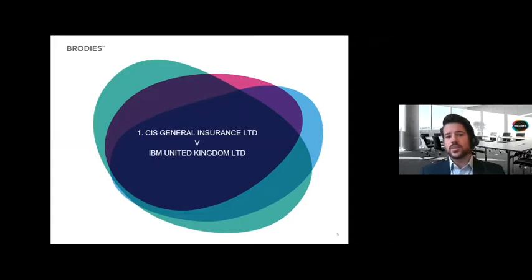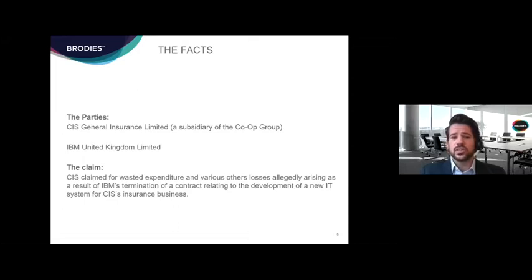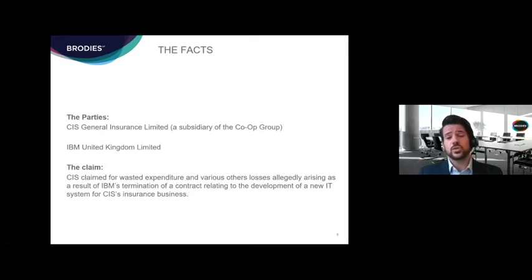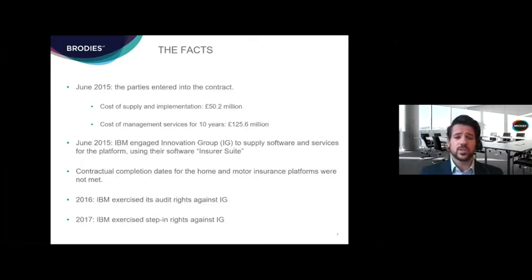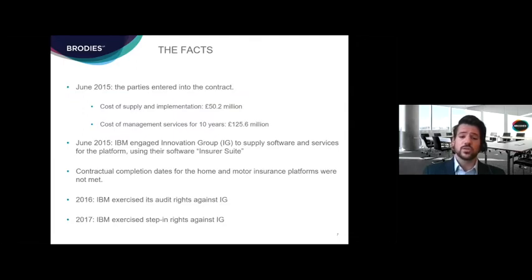Thanks, Ian. I'm going to give a bit of an overview of the recent decision in England in the case of CIS General Insurance against IBM United Kingdom, because this really highlights some of the issues that can arise in disputes relating to complex IT contracts. CIS and IBM had a contract relating to the development of a new IT system for CIS's insurance business. The parties entered into the contract in June 2015; it was a relatively high value contract. IBM engaged Innovation Group as subcontractors to supply software and services for the platform using their software, Insurer Suite.